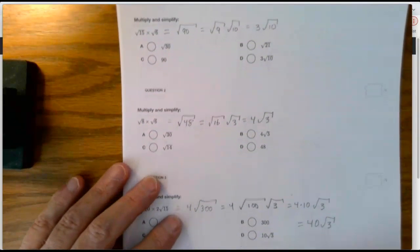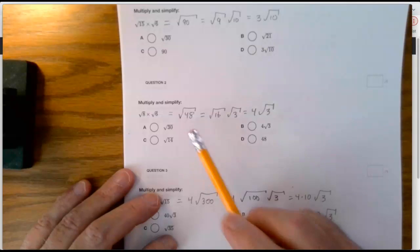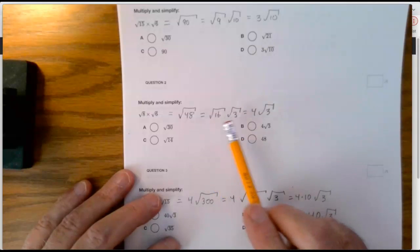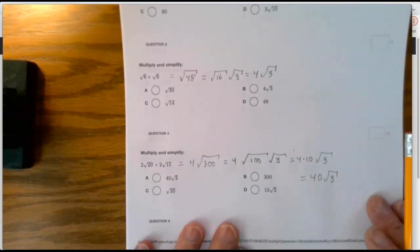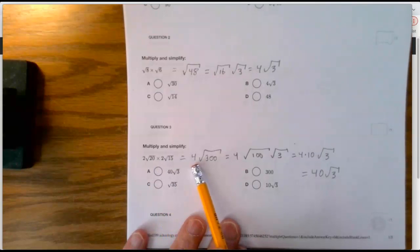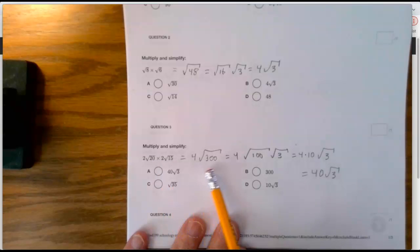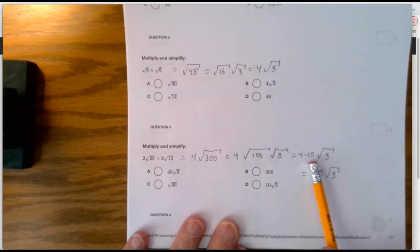Next: square root of 8 times the square root of 6. 8 times 6 is 48, and 48 is 16 times 3. Since 16 is a perfect square, take it outside the radical — it becomes 4. For the next one, multiply 2 times 2 to get 4 out front, then 20 times 15 under the radical gives 300. 300 is 100 times 3, and the square root of 100 is 10. Take it outside and multiply by the 4 already in front: 4 times 10 is 40.